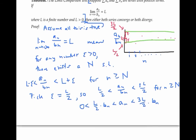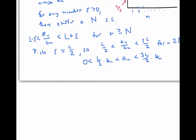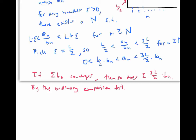Let's think about what this inequality tells us. First of all, if the sum of the b sub n's converges, then so does the sum of three L over two times b sub n, because I'm just multiplying that series by a constant — still convergent. But now my a sub n terms are less than the terms of a convergent series, so by the ordinary comparison test, we know that the sum of the a sub n's converges also.